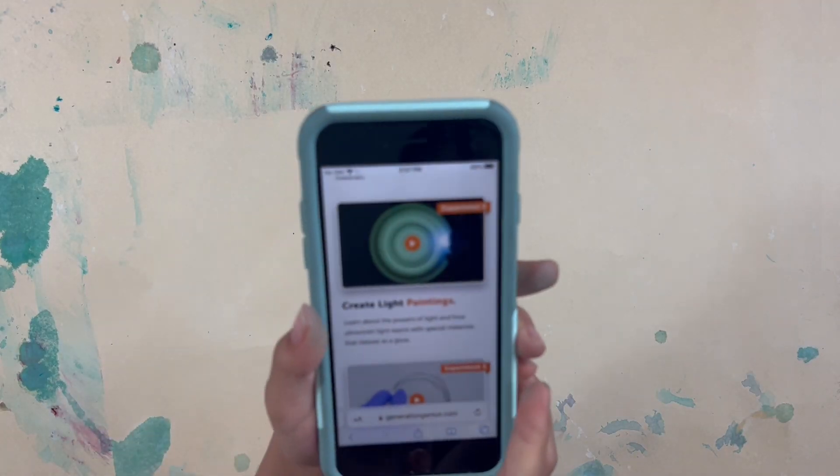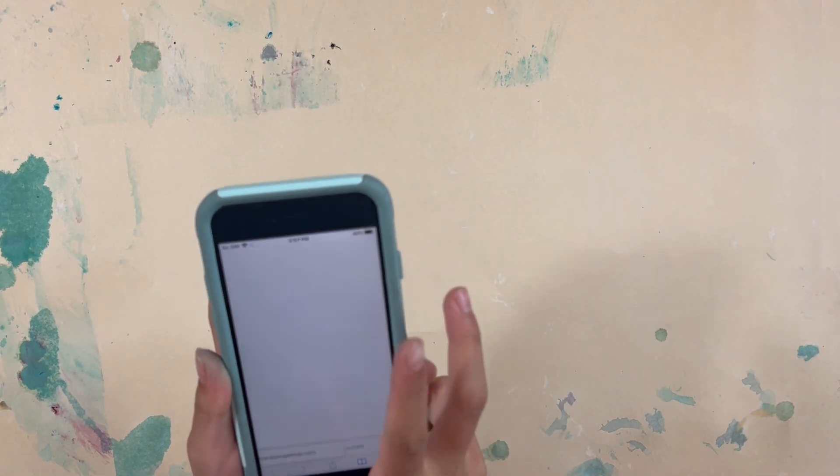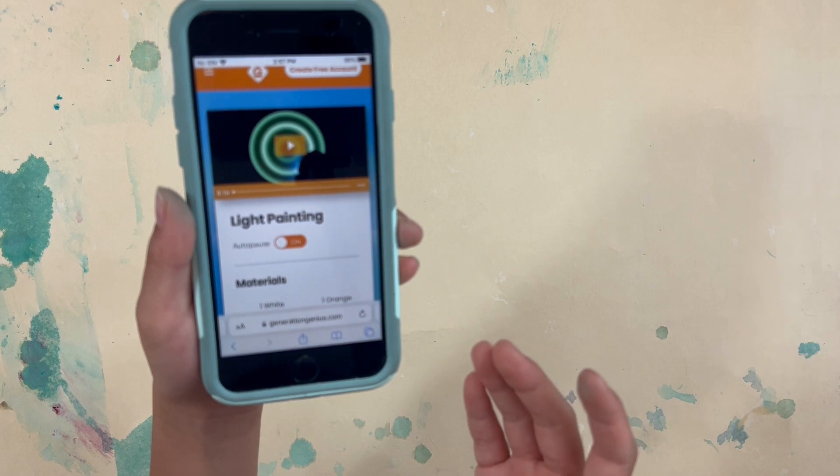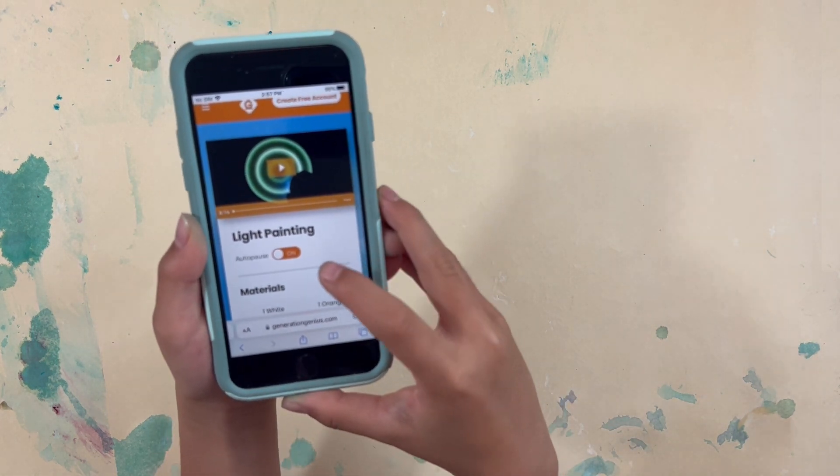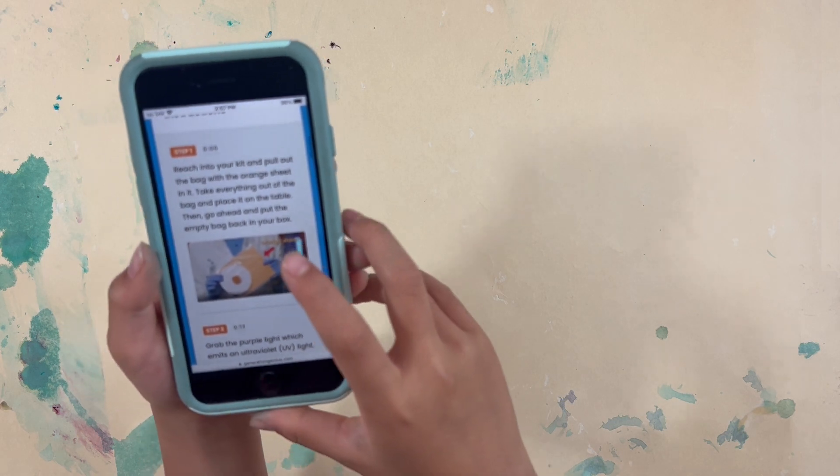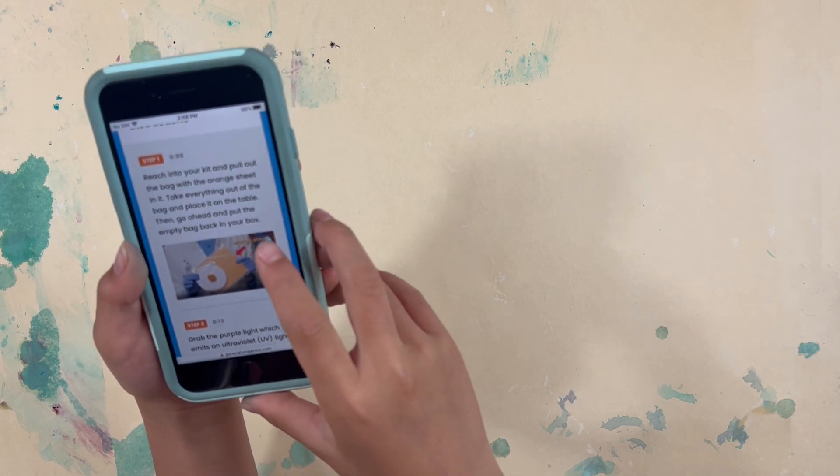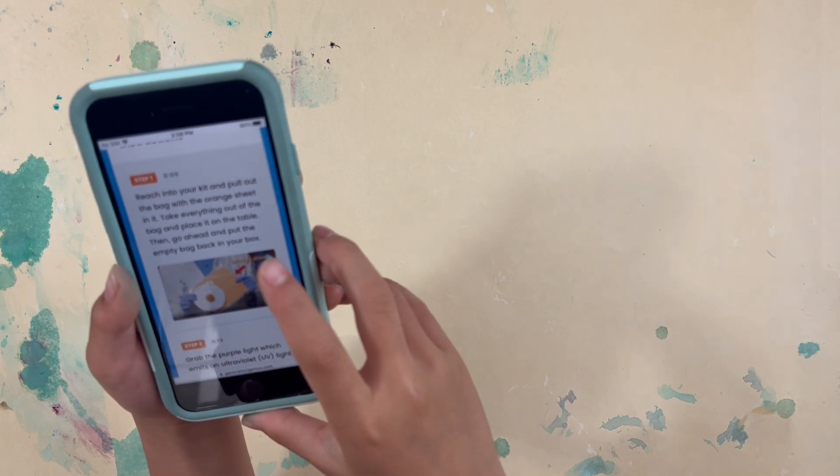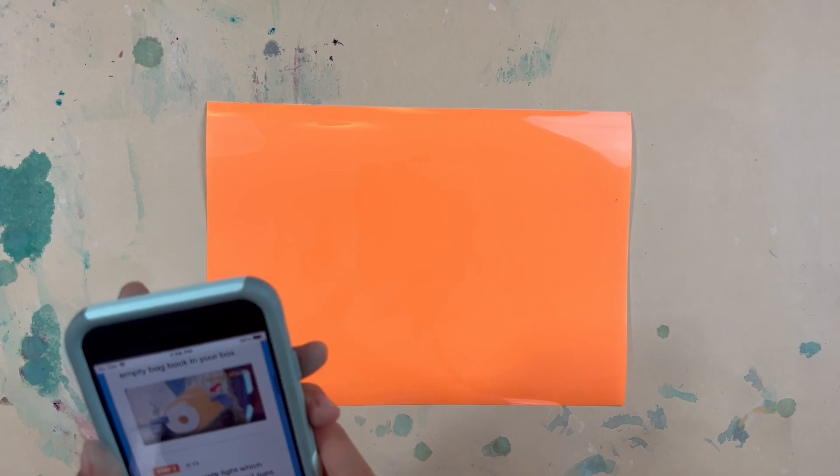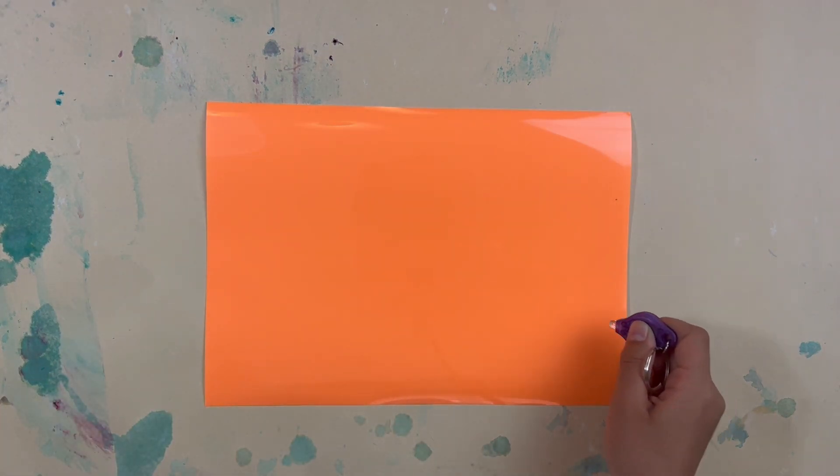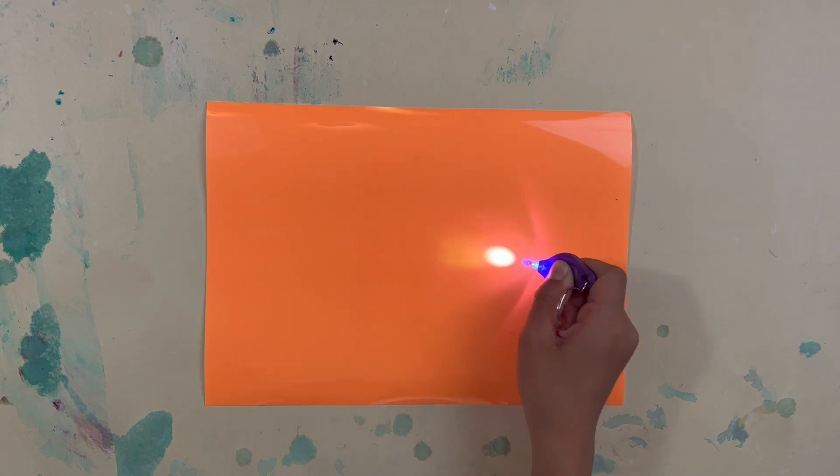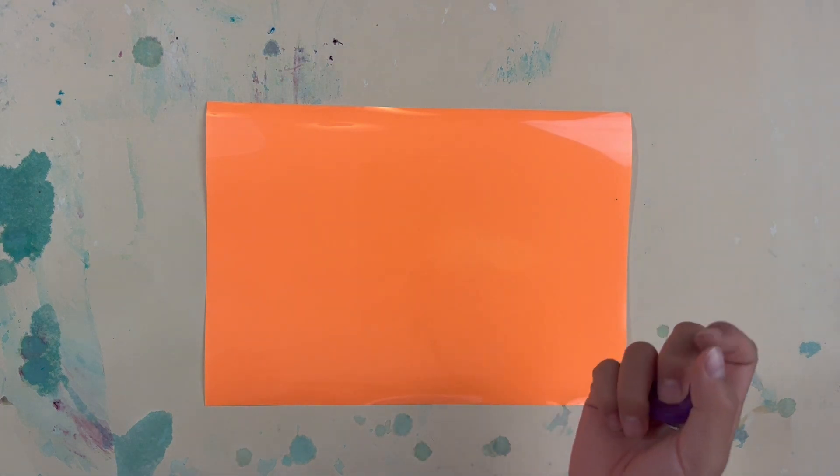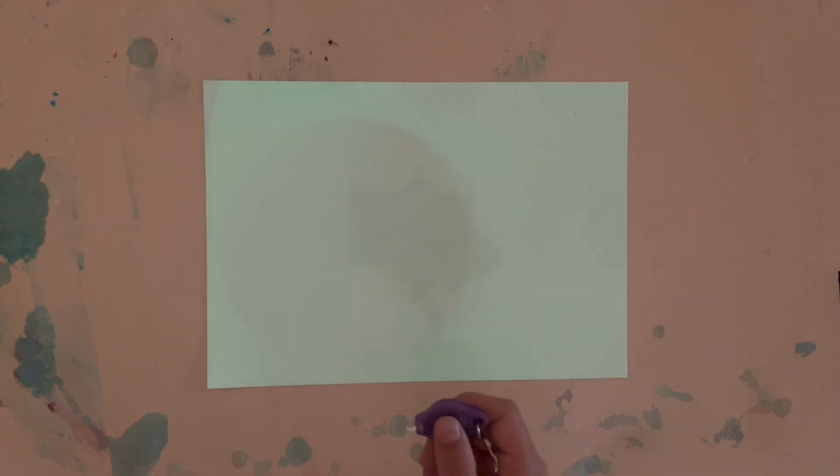So for experiment two called create light paintings, there's an eight minute video. So this one will be pretty quick. But let's do the instructions. Step one, reach into your kit and pull out the bag with orange sheet in it. Step two, grab the purple light. So first for step two, you can see purple light. But for step three, grab the white sheet of paper and dim the light. Let's just try to go in zigzag motion.